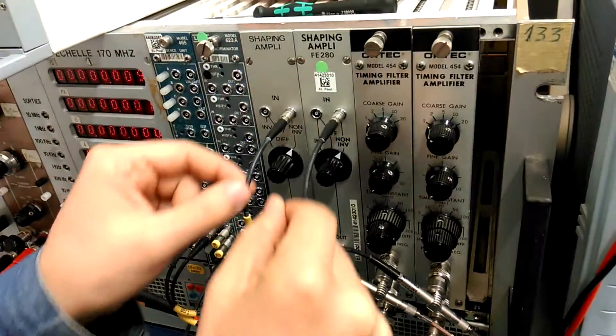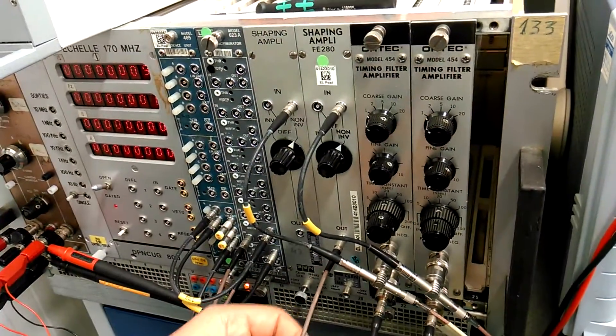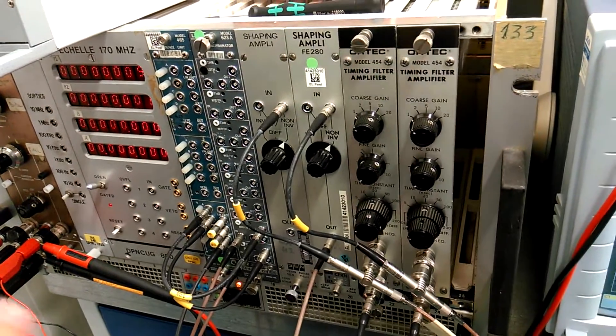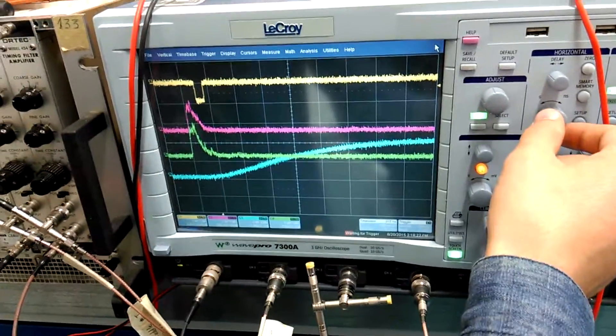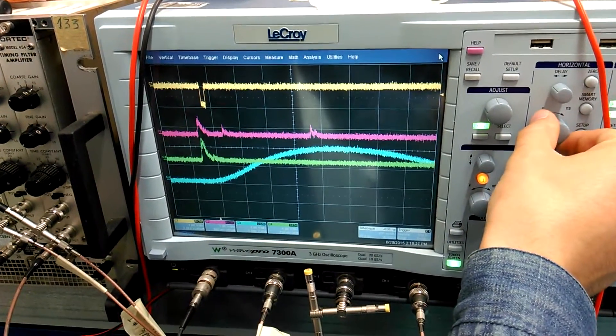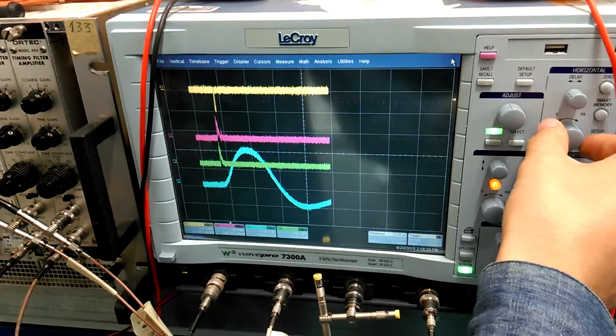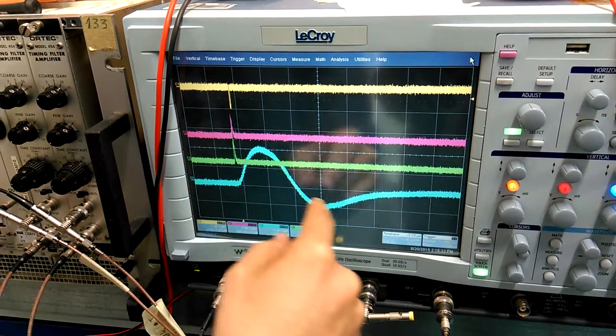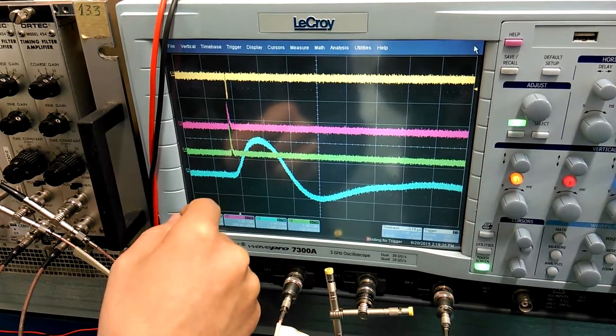This shaper, we have two channels, generates a long bipolar signal which we can see on the scope. If I reduce the time scale here, you start seeing a long signal. This is the shaped signal. This small signal you showed us is shaped into that.